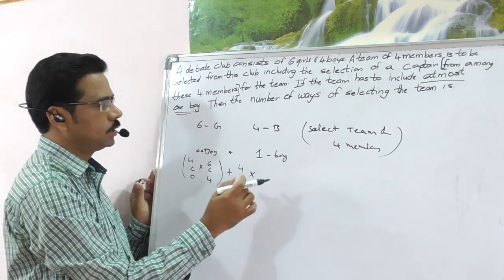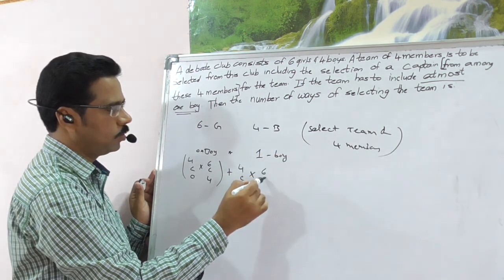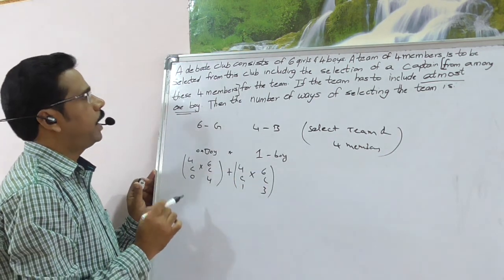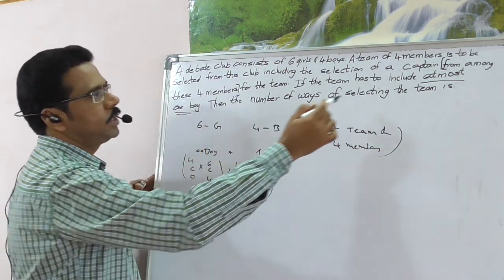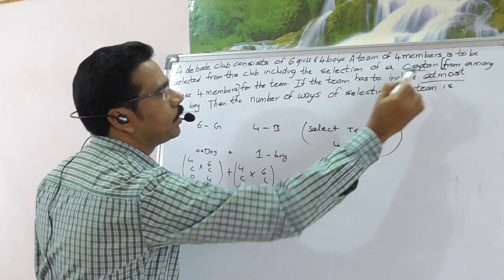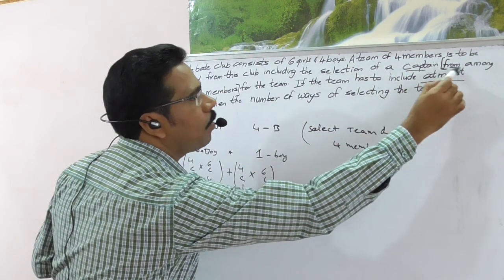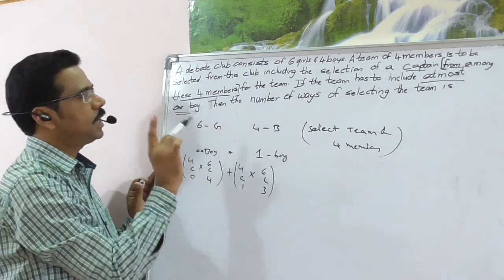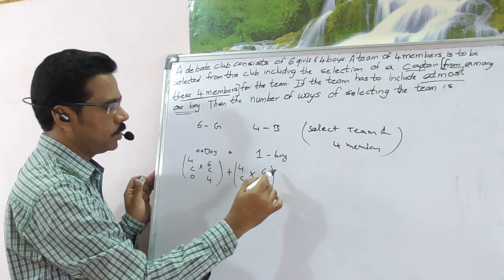Here, we have to select 3 girls. Why? Because total you have to select 4. Out of 6, select 3. Right. And one more condition also there here. Just observe. We have to select a captain from among these 4 members. This can be done by 4C1.